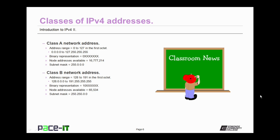We begin with a Class A network address. Class A networks have an address range of 0 to 127 in the first octet, giving us addresses from 0.0.0.0 up to 127.255.255.255. The first octet on the left has a binary representation that always begins with a zero. This gives us a possible 16,777,214 host addresses. The subnet mask with a Class A network is always 255.0.0.0.